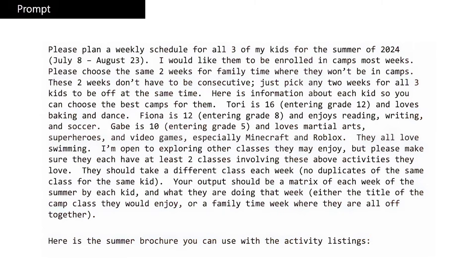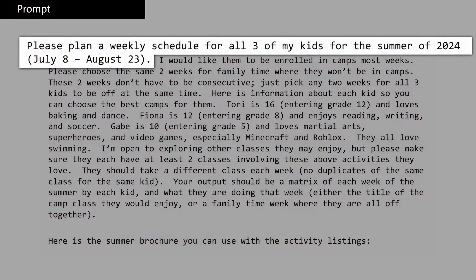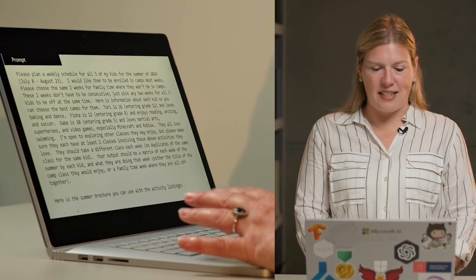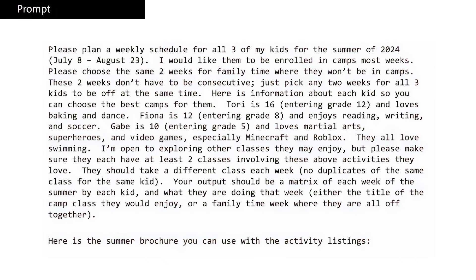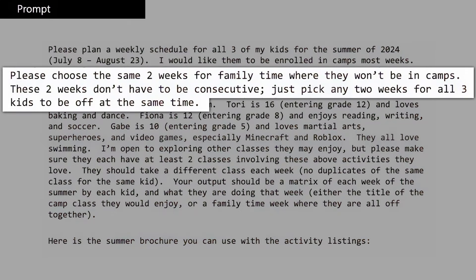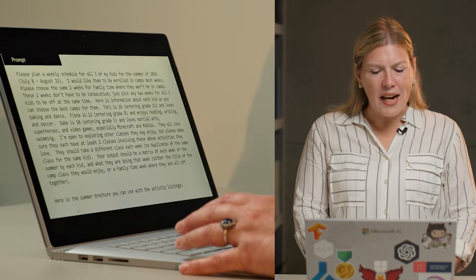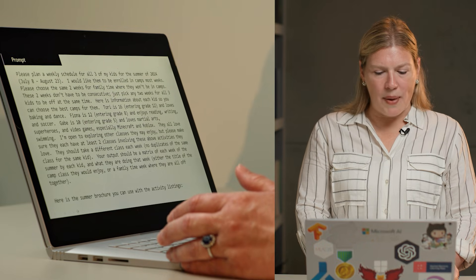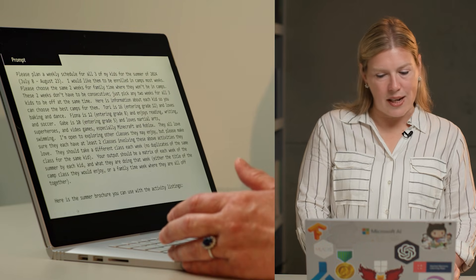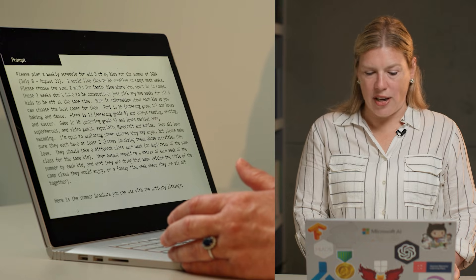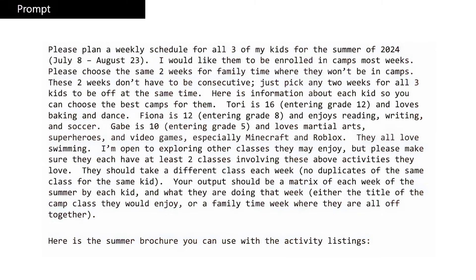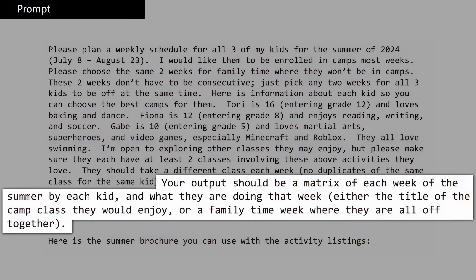This is what my prompt looks like. I ask it to plan a weekly schedule for all three of my kids for the summer of 2024, and I gave it the specific dates. I have some constraints here, because at its essence this is a huge constraint satisfaction problem, where I want it to have two weeks for them to not be in camps — where all of us are off together for some family time. Then I gave it some information about each of my children, including what grade they're entering, as well as each of their interests. I specified that I want my output to be a matrix of each week of the summer by each kid with the title of the class that they're in.